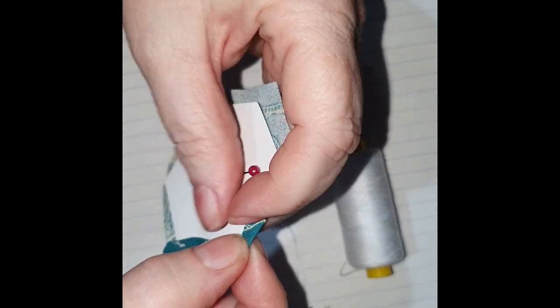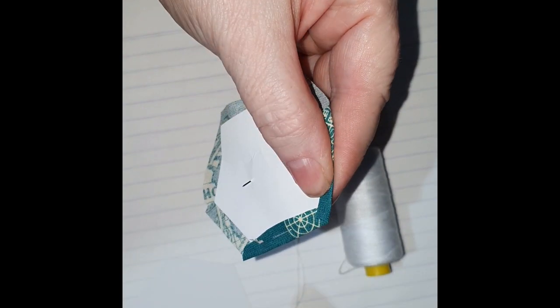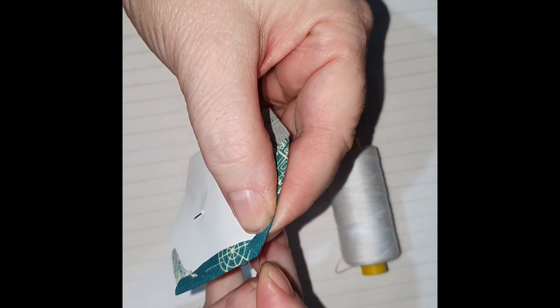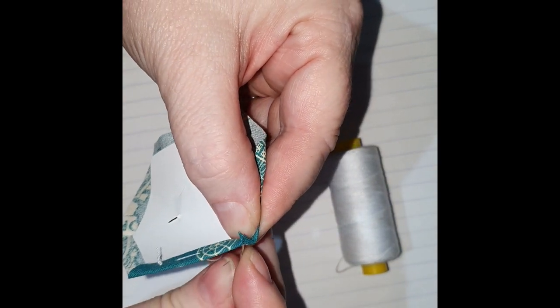Just going around the hexagon in big stitches, it'll hold the fabric in place.